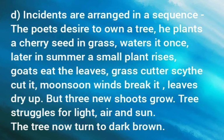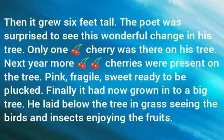Feature D: incidents are arranged in a sequence. The entire poem follows a sequence: the poet's desire to own a tree; he plants a cherry seed in the grass; he waters it once; in summer a small plant rises; the goat eats the leaves; the grass-cutter's scythe cuts it down; the monsoon winds break it; leaves dry up; but three new shoots grow; the tree struggles for light, air, and sun; it turns dark brown; grows six feet tall; the poet is surprised after missing one season; only one cherry appears; next year more cherries — pink, fragile, sweet, ready to be plucked; finally it has grown into a big tree and he lay below it in the grass, watching birds and insects enjoying the fruits. Thus a clear sequence of incidents is visible.